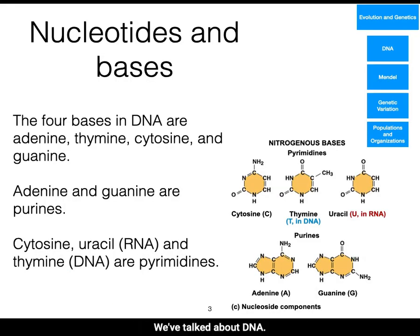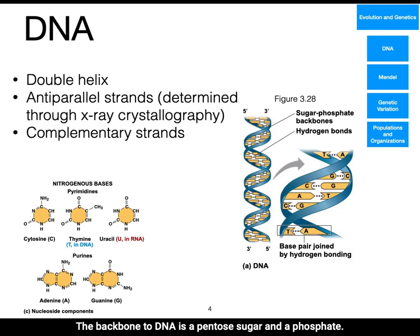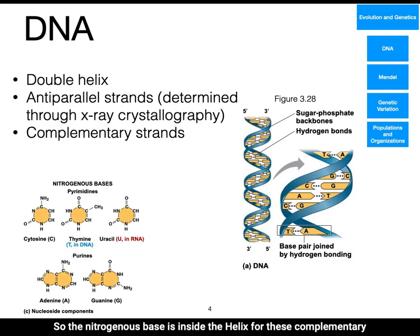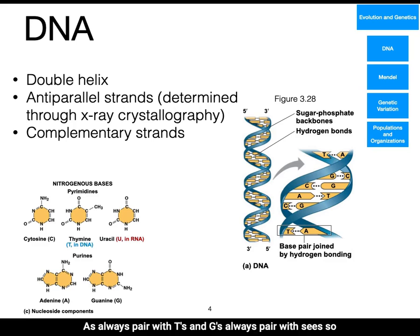By way of reminder, we've talked about DNA. There are four bases for DNA and RNA. DNA specifically has cytosine, thymine, adenine, and guanine. The backbone to DNA is a pentose sugar and a phosphate, so the nitrogenous base is inside the helix. For these complementary strands, only certain bases will line up and bond with other bases. These bondings occur based on the base pairing rules. A's always pair with T's and G's always pair with C's.